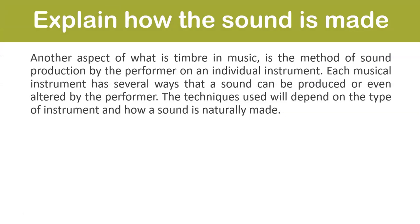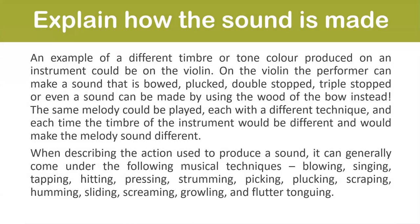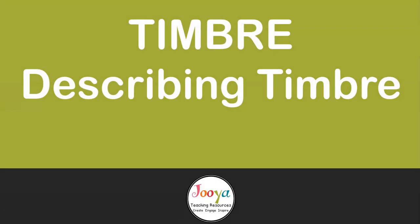Another aspect of timbre in music is the method of sound production by the performer on an individual instrument. Each musical instrument has several ways that a sound can be produced or altered by the performer. An example of different timbre produced on an instrument could be on the violin — the performer can make a sound that is bowed, plucked, double stopped, triple stopped, or even a sound can be made using the wood of the bow. When describing the action used to produce a sound, it can generally come under the following musical techniques: blowing, singing, tapping, hitting, pressing, strumming, picking, plucking, scraping, humming, sliding, screaming, growling, and flutter tonguing.